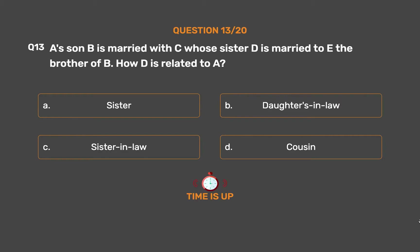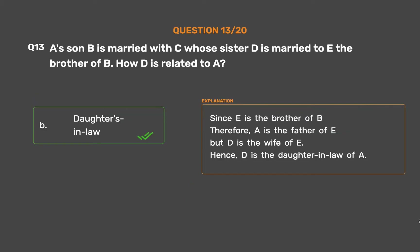The correct answer is Option B: Daughter-in-law. Since E is the brother of B, A is the father of E. But D is the wife of E. Hence, D is the daughter-in-law of A.